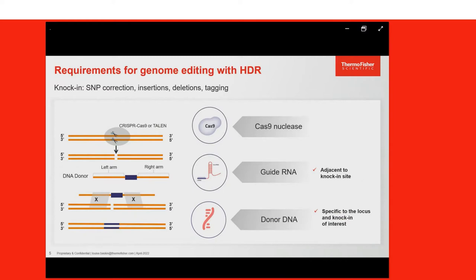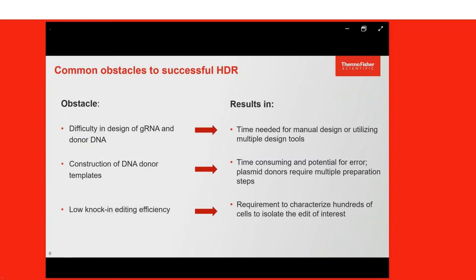Let's talk more about the requirements for HDR, also commonly referred to as knock-in. The process requires not just a Cas9 nuclease to make the cut in the genome, but also a guide RNA designed adjacent to the knock-in site, plus a DNA donor template — that piece of DNA with sufficient homology on each end of the DNA cut site plus the region that includes your desired edit, such as an insertion, a SNP change, or a fluorescent tag. There are three required components for doing an HDR edit with CRISPR-Cas9, and the type of DNA donor depends on the size of the insertion and the DNA region being targeted. Proper donor design is really important for effective genome editing.